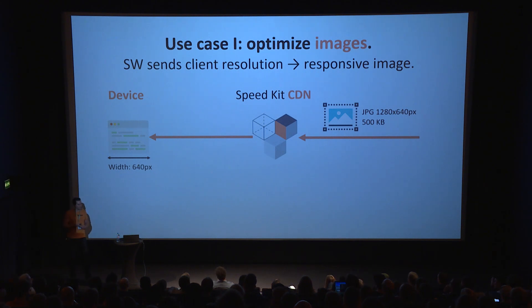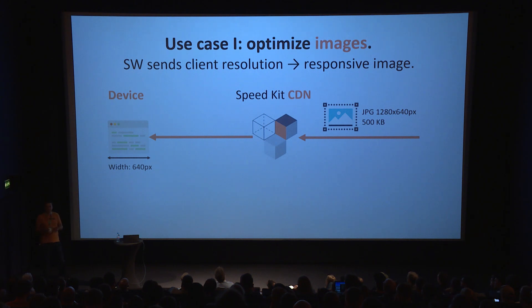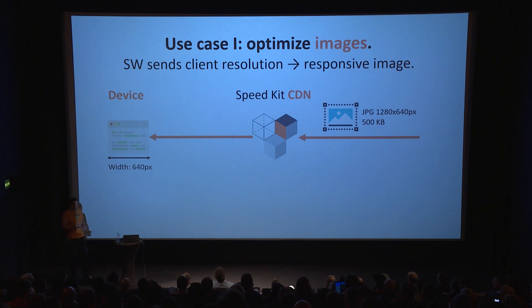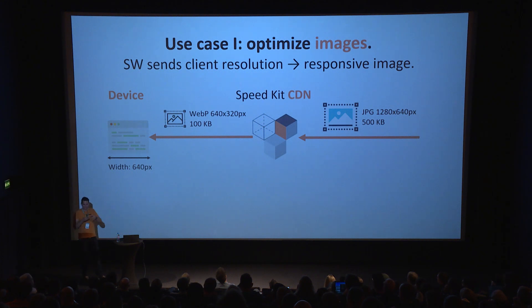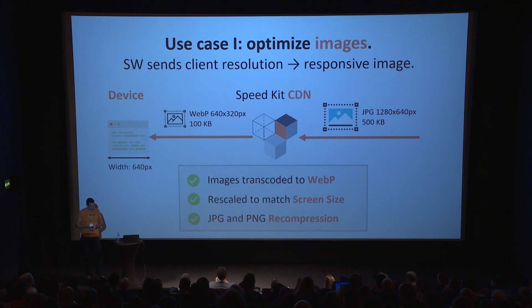One interesting use case: you can completely manipulate what data you get from a requested URL. For example, when an application hasn't optimized images, you can do that on the fly. Say a device has a resolution of 640 pixels and requests a very large JPEG file. We know it's much too large to be meaningfully displayed. In the service worker we can fire a request saying 'I'm a device with 640px width and I understand WebP format, please give me a better-suited image.' So we do responsive images on the fly by leveraging the service worker's knowledge of the browser that we wouldn't normally have on the server side.